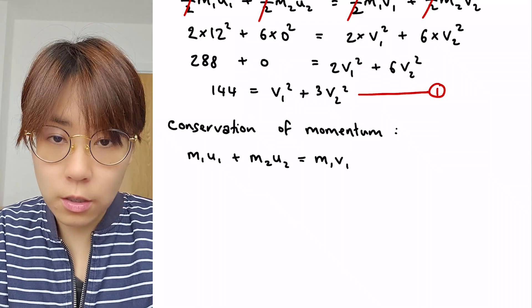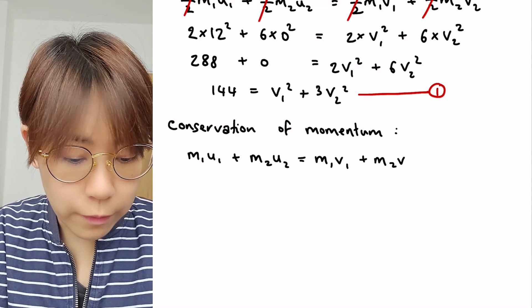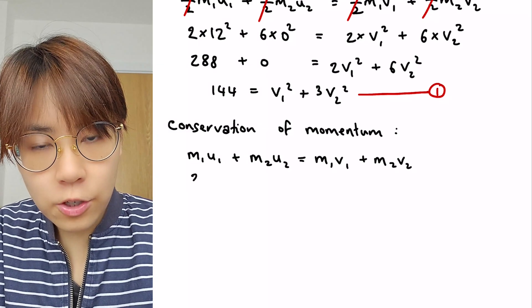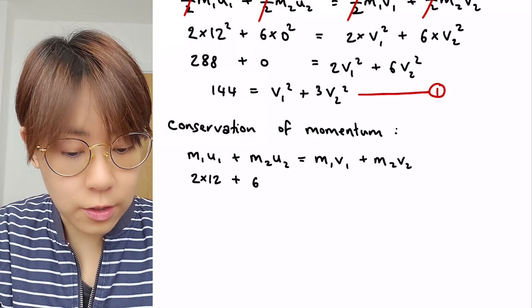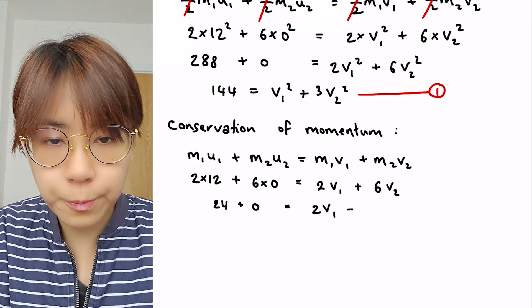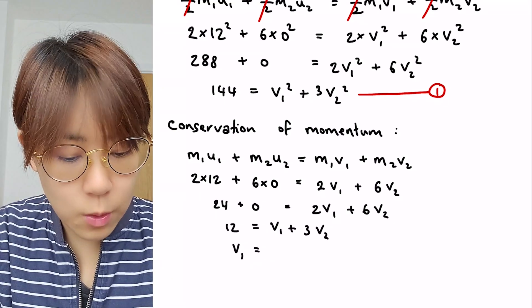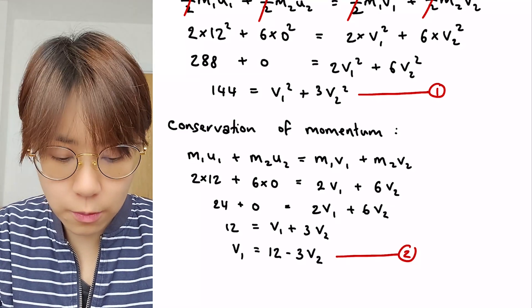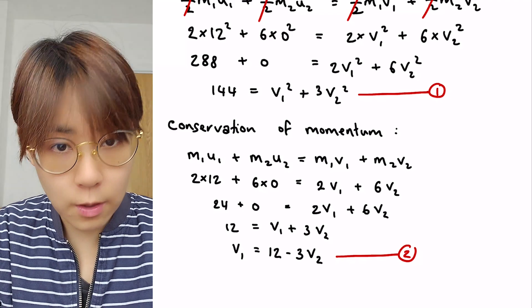Using conservation of momentum, m1 u1 plus m2 u2 is equal to m1 v1 plus m2 v2. The initial velocity of the second trolley is zero, so this component is going to cancel to zero. We are left with v1 is equal to 12 minus 3 v2. This is our second equation.